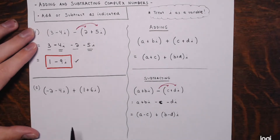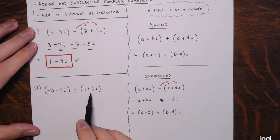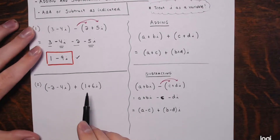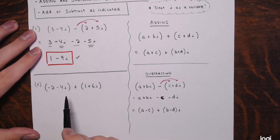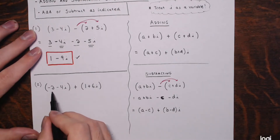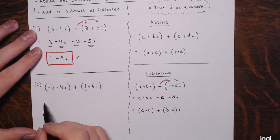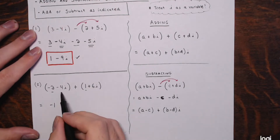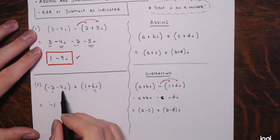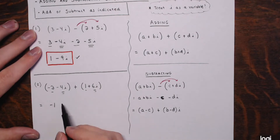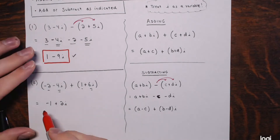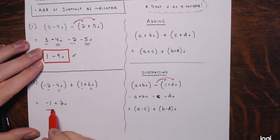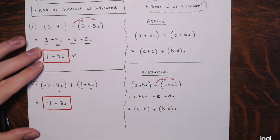Example 2: we are adding two complex numbers. There's nothing to distribute, so you just combine the real numbers: negative 2 plus 1 is negative 1 for the new real part. Then combine the imaginary numbers: negative 4i plus 6i is positive 2i. The result is negative 1 plus 2i. These don't go together because you have a real number and an imaginary number — you can't combine those, they aren't like terms.